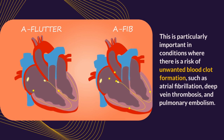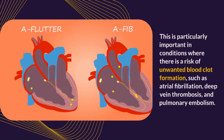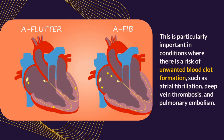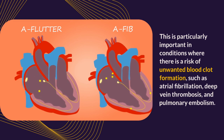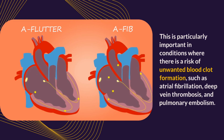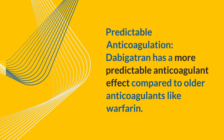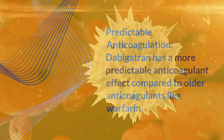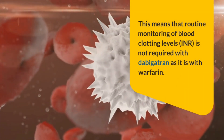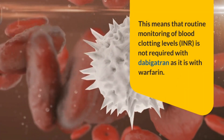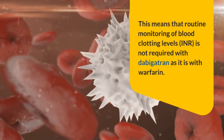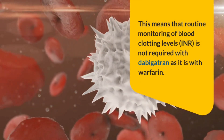This is particularly important in conditions where there is a risk of unwanted blood clot formation, such as atrial fibrillation, deep vein thrombosis, and pulmonary embolism. Dabigatran has a more predictable anticoagulant effect compared to older anticoagulants like warfarin. This means that routine monitoring of blood clotting levels (INR) is not required with dabigatran as it is with warfarin.